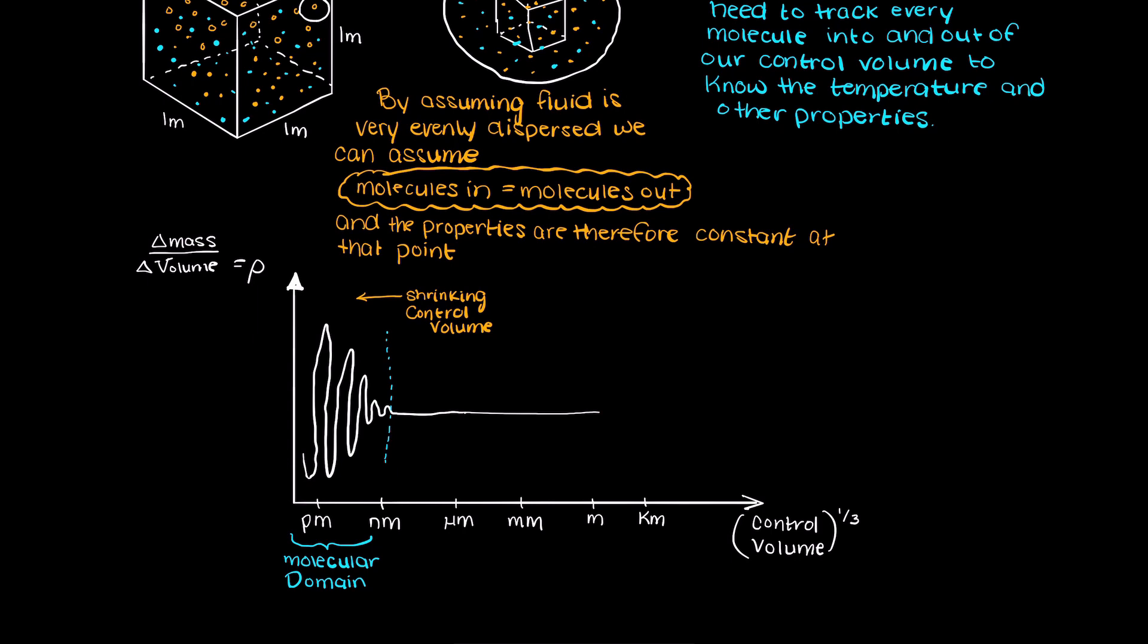Likewise, on the other end of the spectrum, when we grow our control volume such that each side is kilometers big, the approximation of our fluids being continuous doesn't make sense as we couldn't define a temperature or pressure for the control volume. Think of trying to find the pressure or temperature of a box that covers from you to the top of the stratosphere.